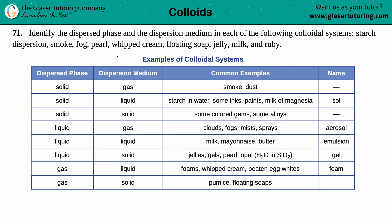Number 71: identify the dispersed phase and the dispersion medium of each of the following colloidal systems — starch dispersion, smoke, fog, pearl, whipped cream, floating soap, jelly, milk, and ruby.